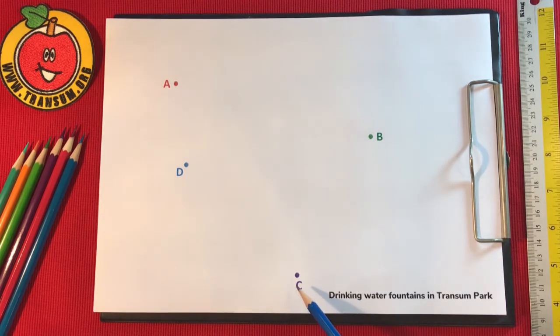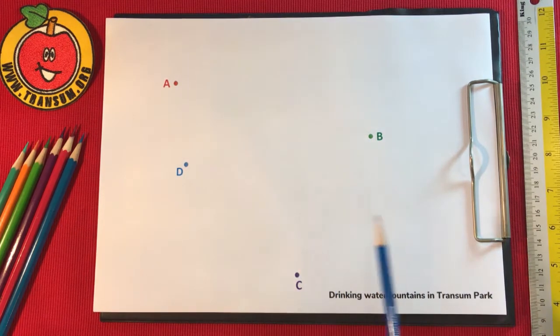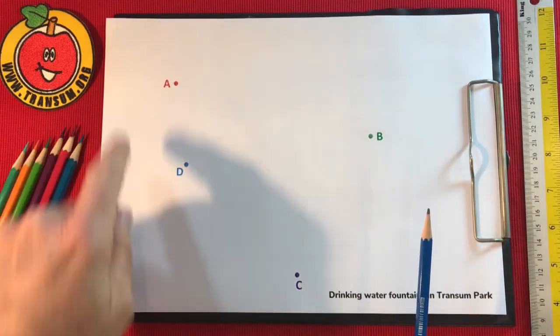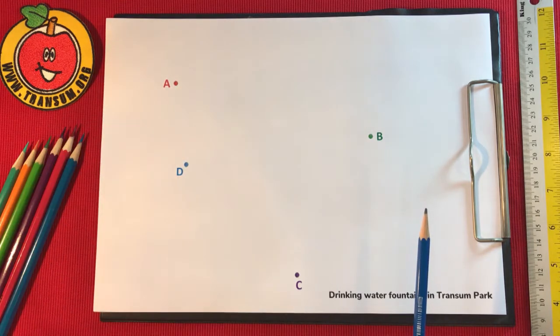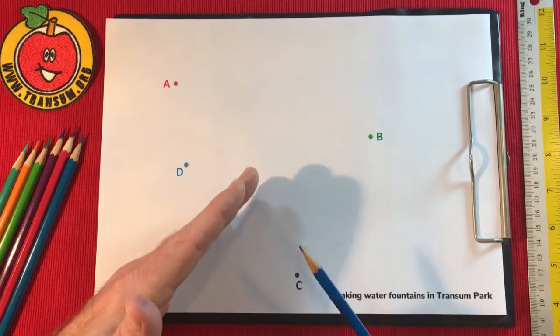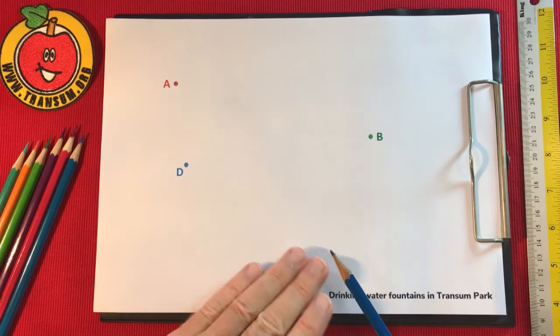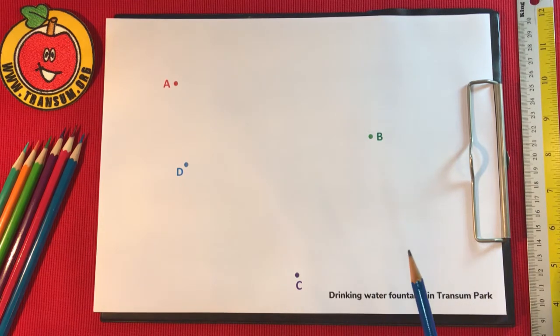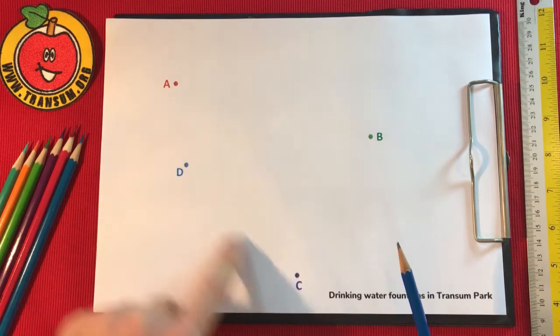First of all let's get rid of the trees. We can't do it with trees in the way. Let's consider this point here, drinking water fountain C. I'm going to consider the other fountains. Well D is close to it, B is close to it, but A is quite far away, so I don't think I need to consider A. I'll just consider C and D, and draw a line between C and D to split up the region into the area that's closest to C and the area that's closest to D. The way I do that is by drawing the perpendicular bisector of CD.